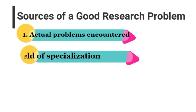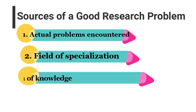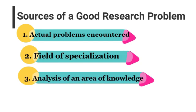Next is field of specialization. If your field of specialization is English, the research problem must be within the teaching of English education. However, if your field of specialization is early childhood education, the topic must be forged within your discipline, not in mathematics or any other fields. Next is analysis of an area of knowledge — for example, analysis of classical and operant conditioning and motivation, or analysis of the models of curriculum evaluation, and other areas of knowledge relative to your program of study.